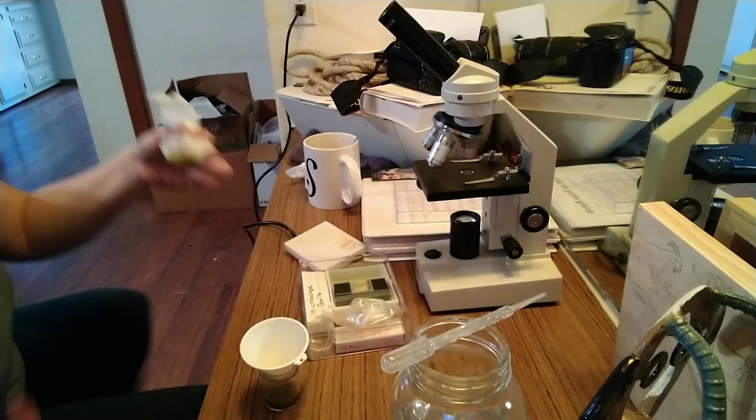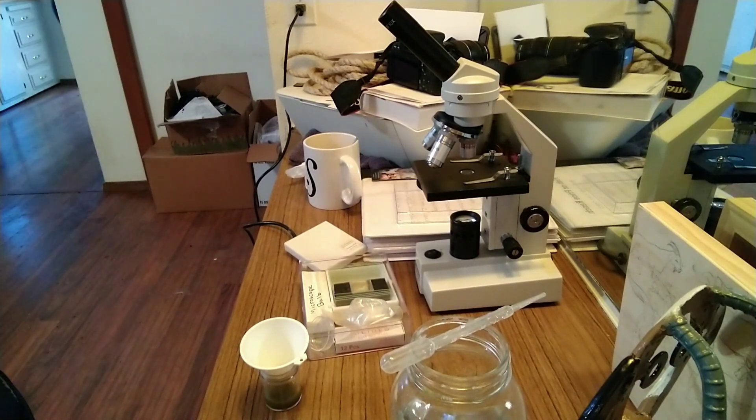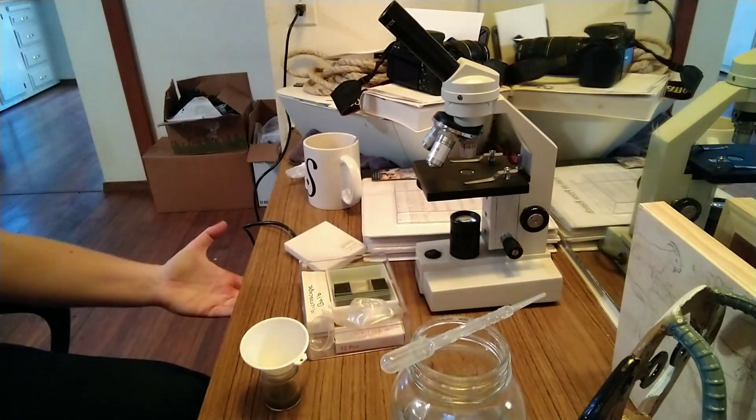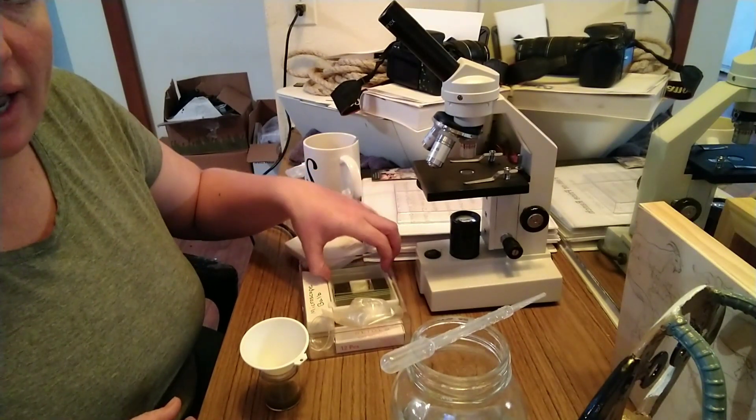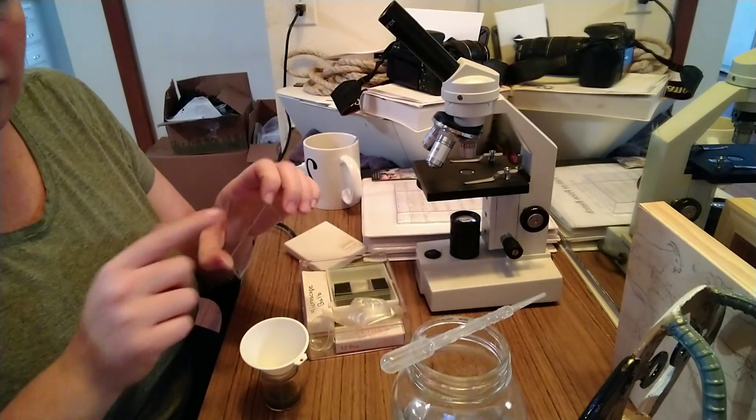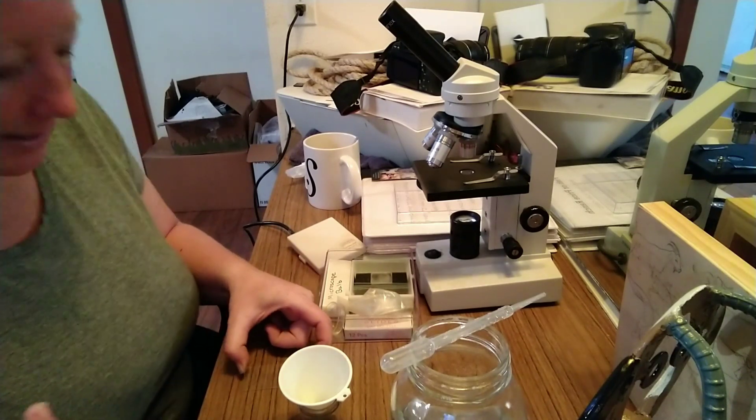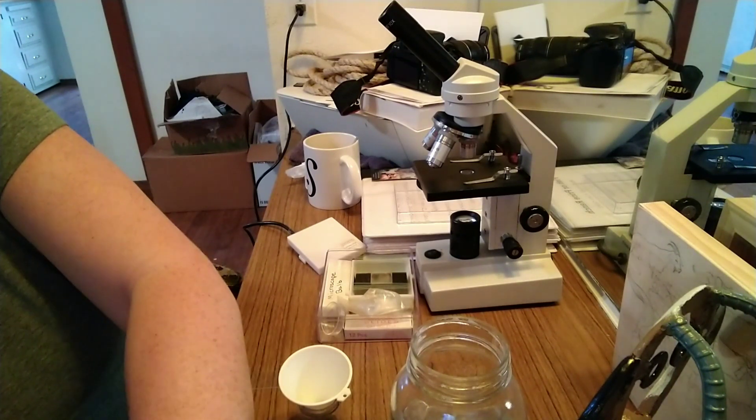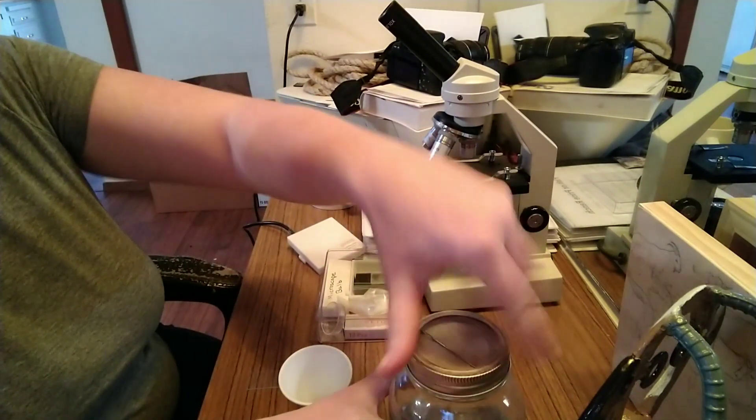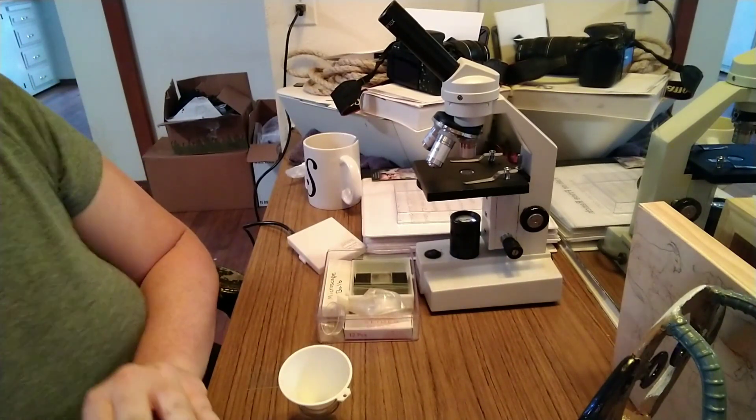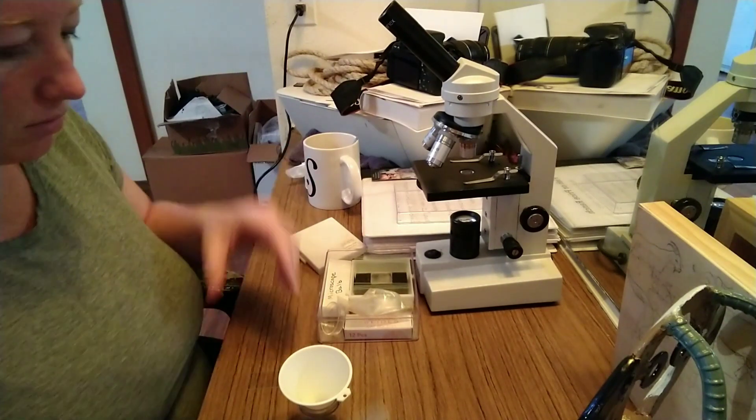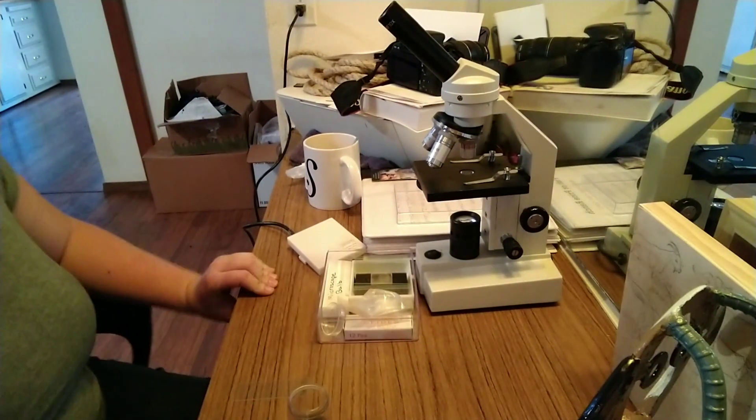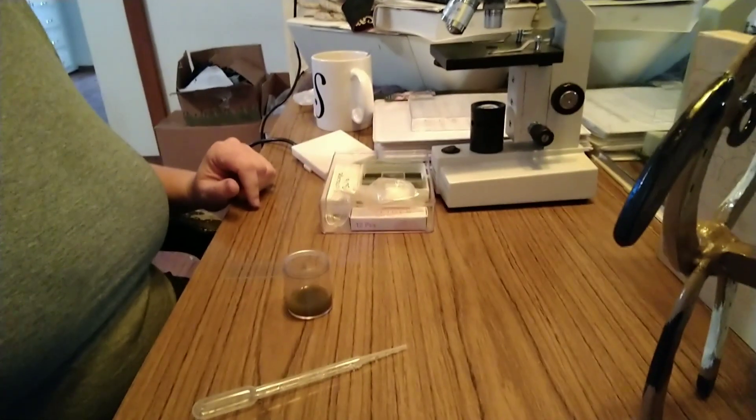All right, so now we're gonna take our slide. Now I do not have McMaster slides yet. I need to order them - they have a little grid on there so you can do an accurate egg count. I need to get on that. So now we're gonna take our plunger. Let me get rid of this salt solution really fast because we're done with that.